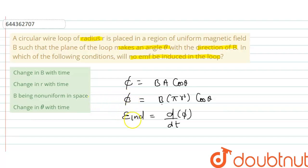Because EMF induced depends on rate of change of flux. That means when B changes with time, or radius changes with time, or theta changes with time. But,